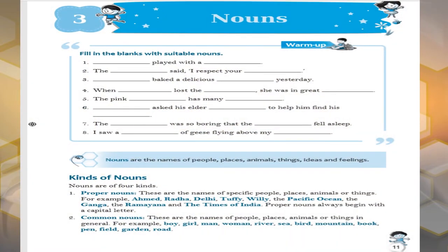In the previous classes, you have done all the naming words are nouns. But this time, nouns are the names of people, places, animals, things, and ideas and feelings also.